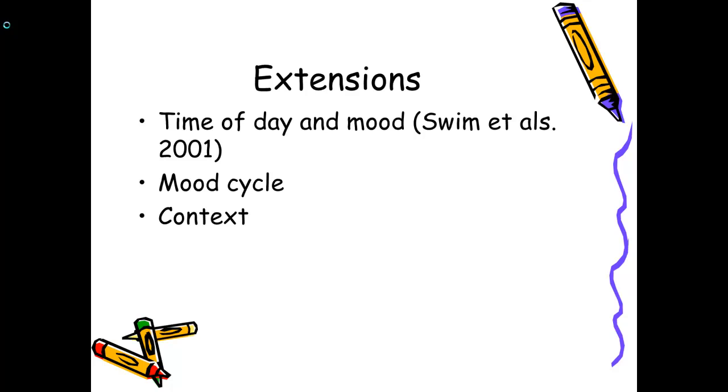She talks about this mood cycle and she refers you to another author. So again, to understand what this extension could be, you would have to read that other article and possibly more articles and then try to relate it to her study. And then she talks about context and she does, again, give you other authors' studies to read. You should read those and then try to tie them back to her study. So these are all possible extensions to Swim's study.